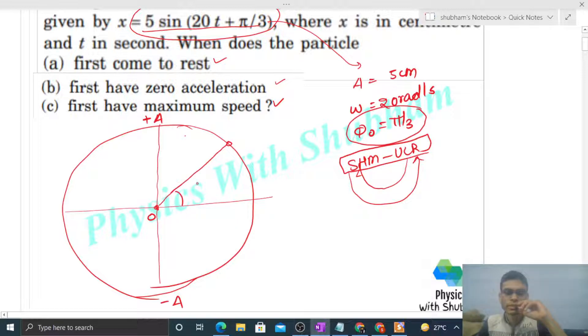The particle is at φ₀ which is π/3, and its projection will be here. This particle rotates with omega, we know omega's value, doing uniform circular motion. Then its projection will do SHM.